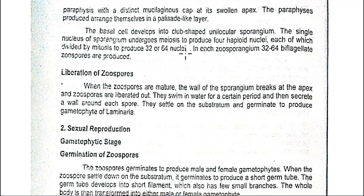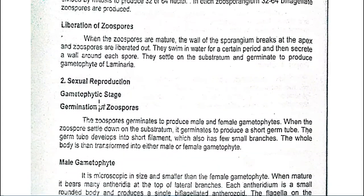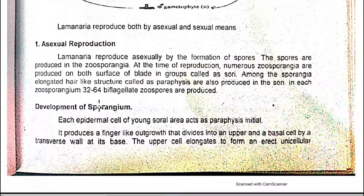After formation, the zoospores are liberated and germinate. When the zoospores are mature, the wall of the sporangium breaks at the apex, and the zoospores are liberated into the water. They swim for a certain period of time, then secrete a wall around themselves, settle on a substrate, and germinate to produce the gametophyte of Laminaria.